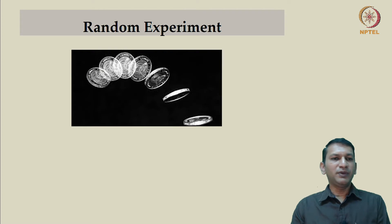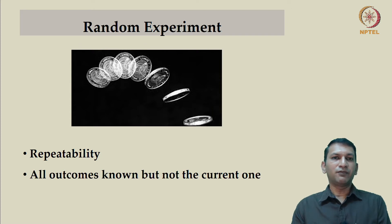When we talk about probability, we assume there is a random experiment that is being conducted. What kind of experiments qualify to be called random experiments? There are three properties that such an experiment should possess. The first of them is repeatability. Second, from the experiment, all possible outcomes must be known even though the one that is currently going to come out is not really known.